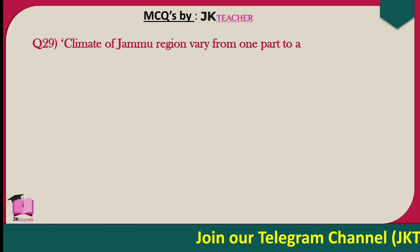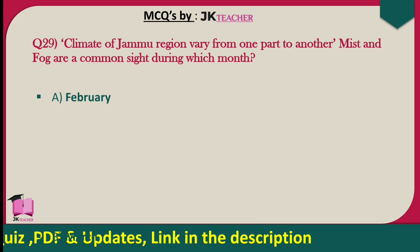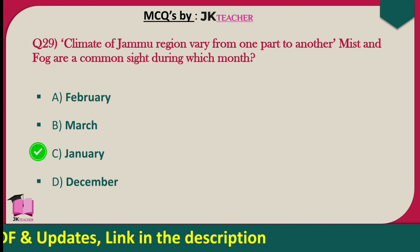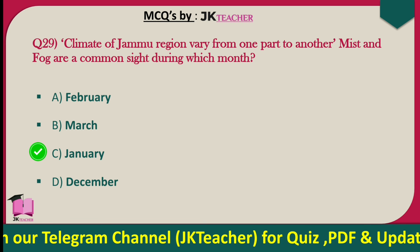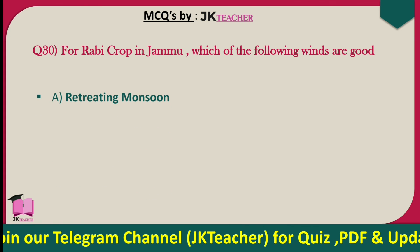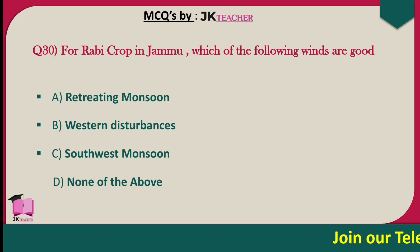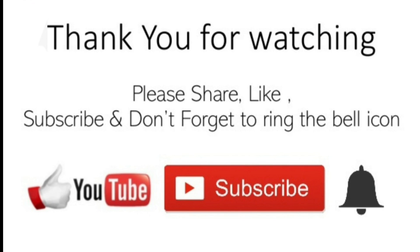Climate of Jammu region varies from one part to another. Mist and fog are a common sight during which month? Options are February, March, January, and December. The right answer is option C — January. Mist and fog are commonly sighted during January. For Rabi crops in Jammu, which winds are good? Options are retreating monsoon, western disturbances, southwest monsoon, and none of these. The right answer is option B — western disturbances are good for Rabi crops in Jammu. That's it for today's session — thank you for watching. If you liked the video, like and subscribe to our channel. Allah Hafiz.